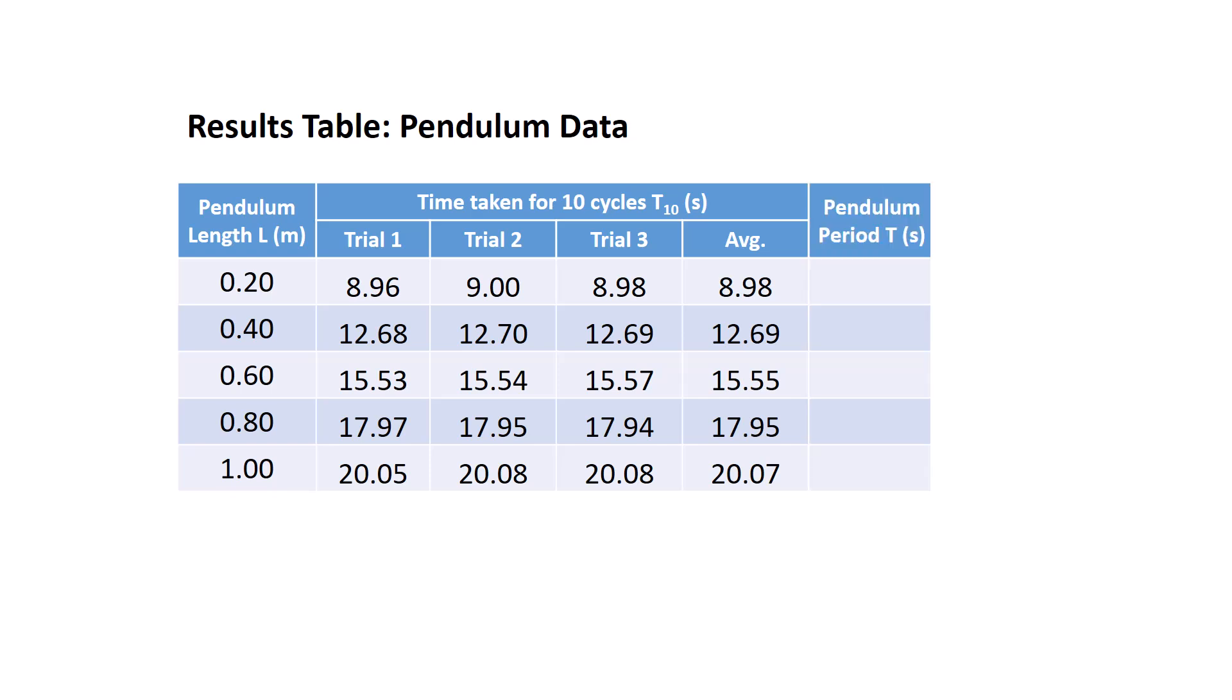The next step is to calculate the pendulum period. Remembering that the average value we've calculated is for 10 oscillations or 10 cycles, we have to take the value of each average and divide it by 10 to calculate the time for one individual oscillation or period.